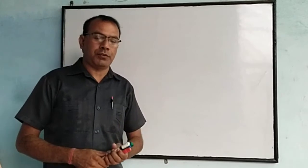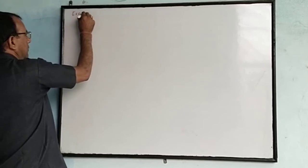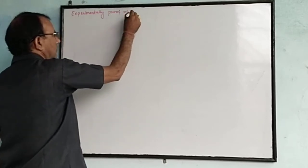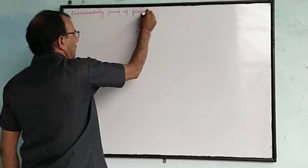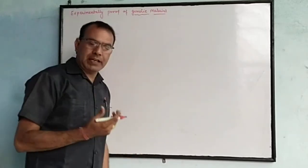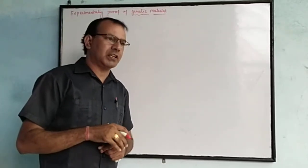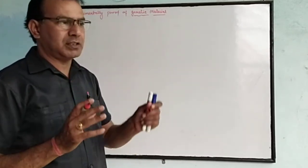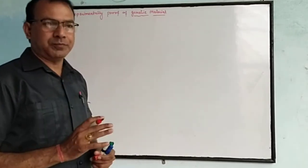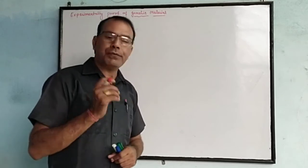Hello students, in this part we will discuss the experimental proof of genetic material. DNA was discovered by Frederick Miescher, and in the previous chapter Mendel proposed how traits transfer from one generation to the next. But there was no certainty about which chemical substances are responsible for genetic inheritance, which is known as genetic material. The first experimental proof was proposed by Frederick Griffith.